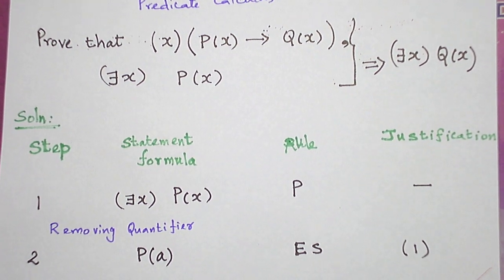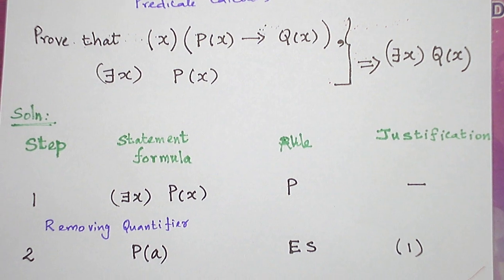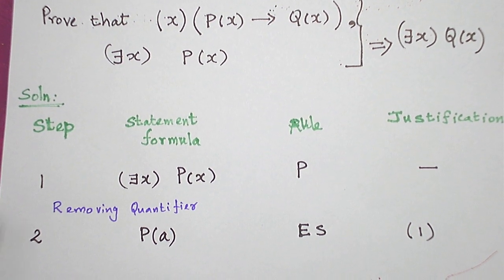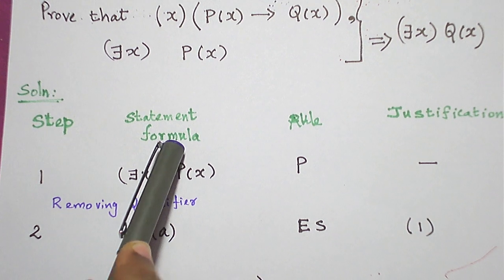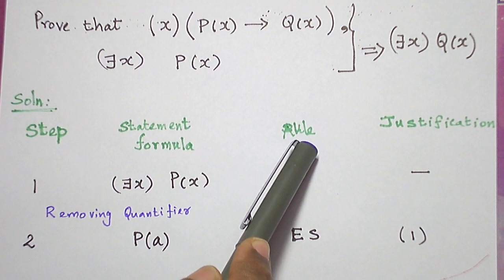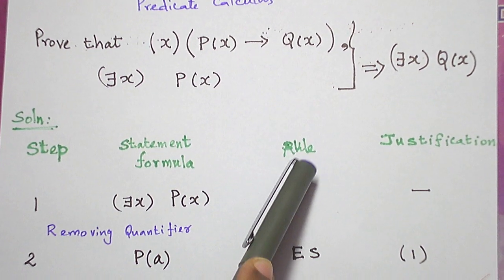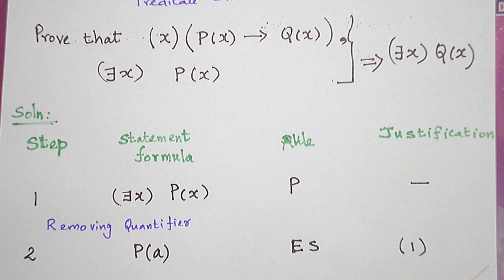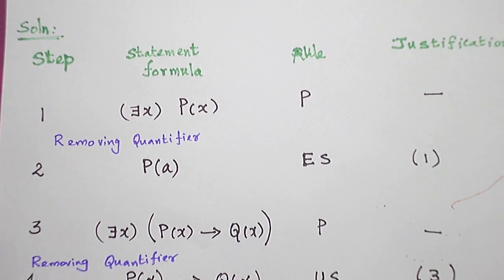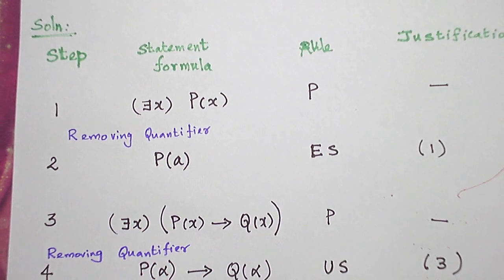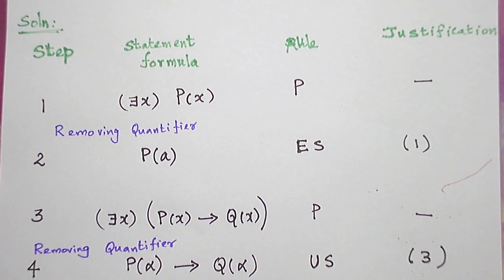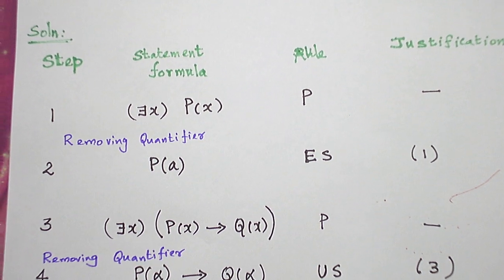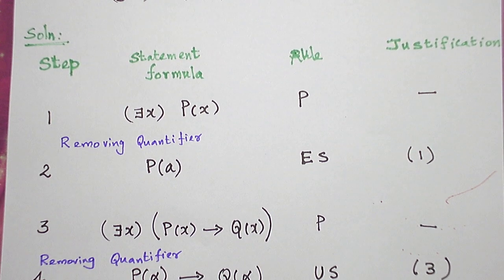For the solution, I split the answer into four columns: the first column is the step, the second column is the statement formula, the third column is the rule, and the fourth column is the justification.